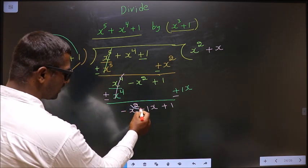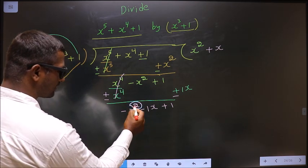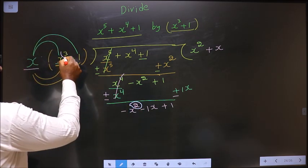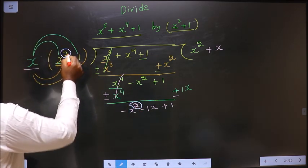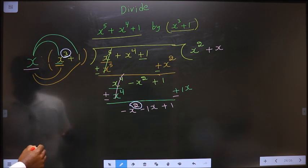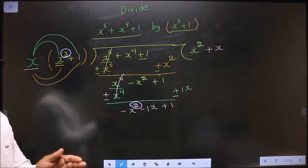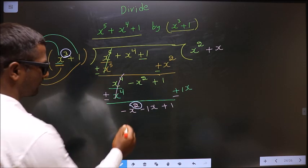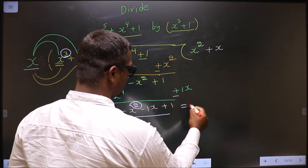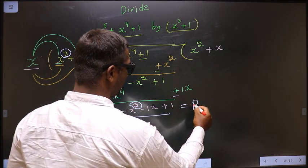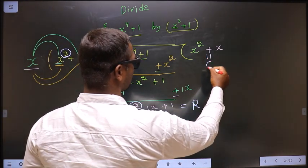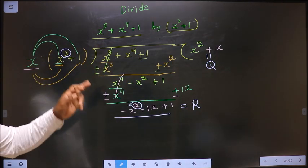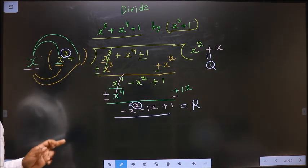Here the highest power of x is 2. In the divisor, the highest power of x is 3. That tells us to stop our division here. Thus, this is the remainder and this is the quotient.